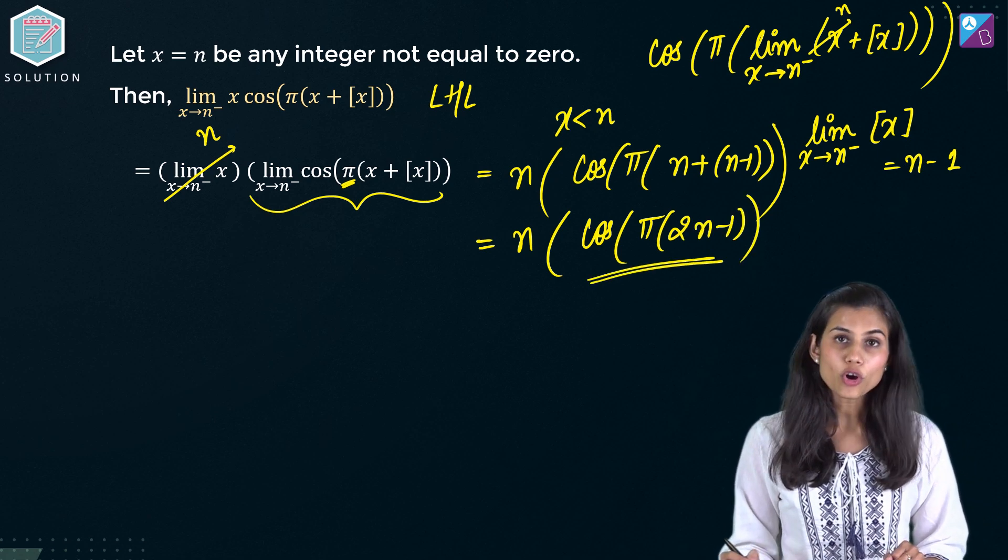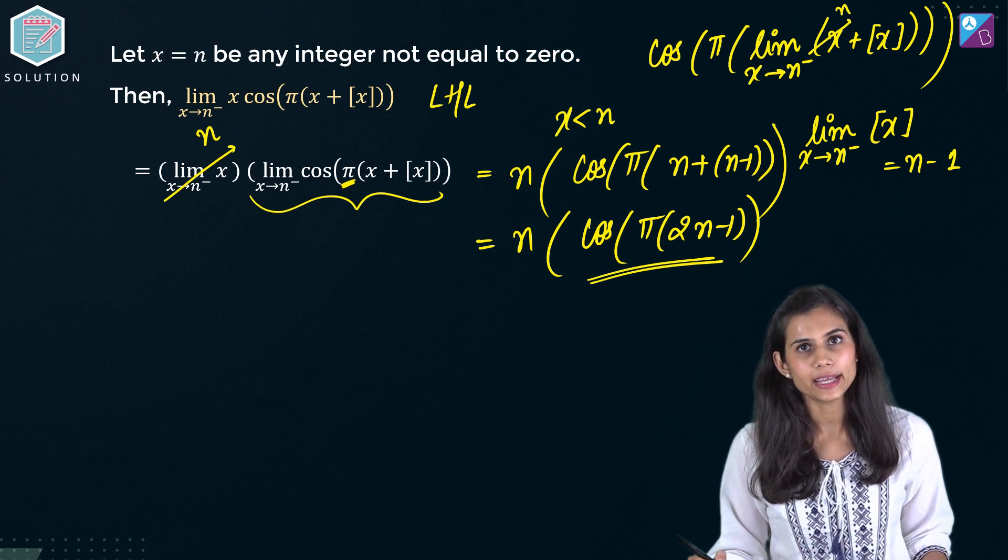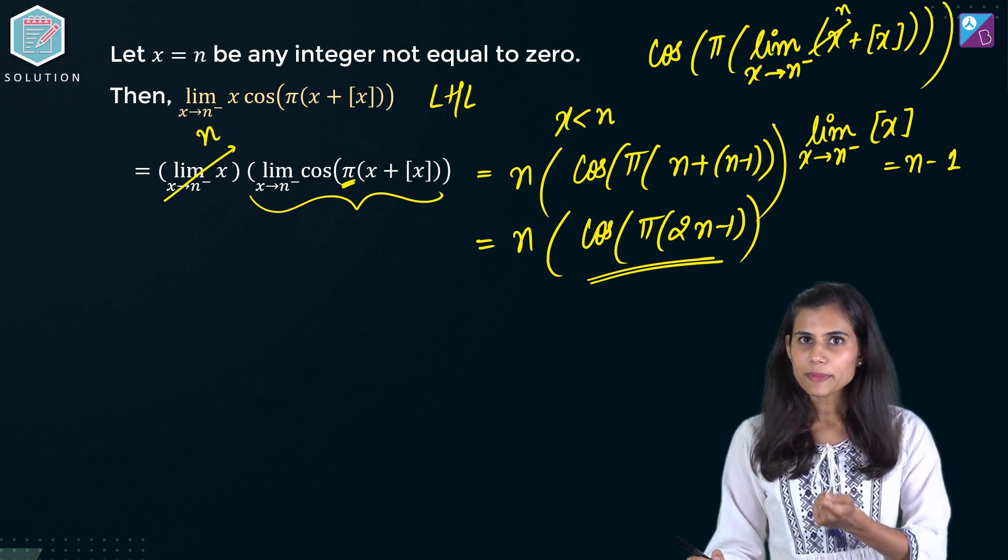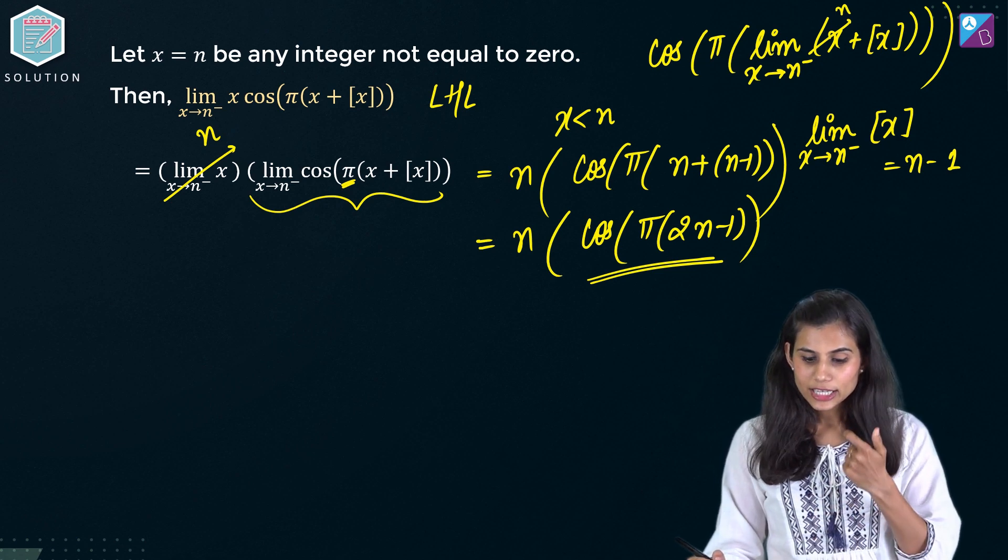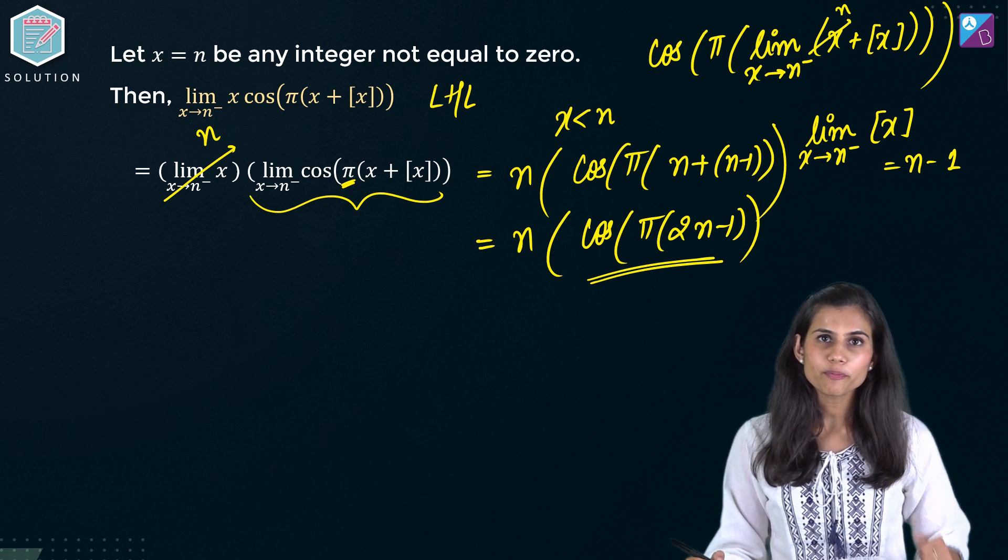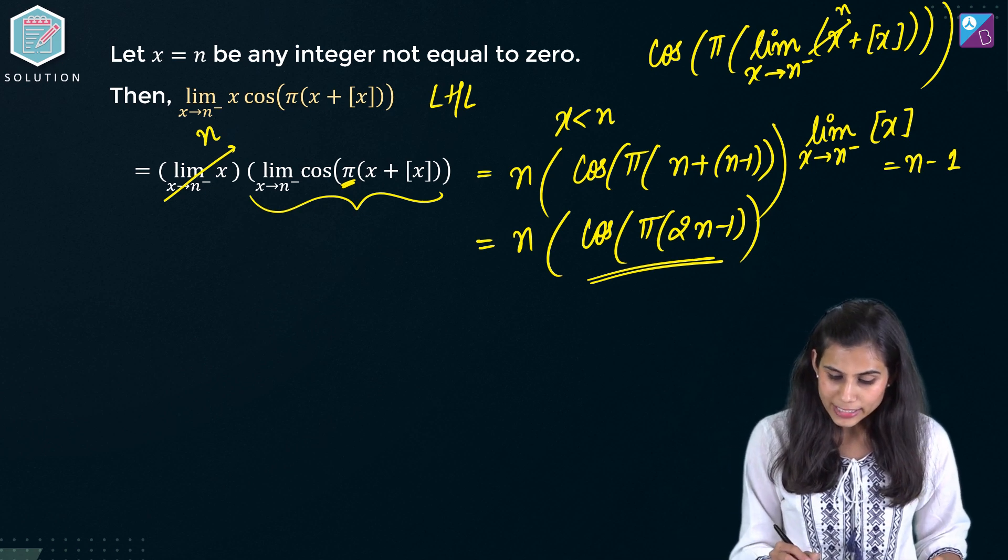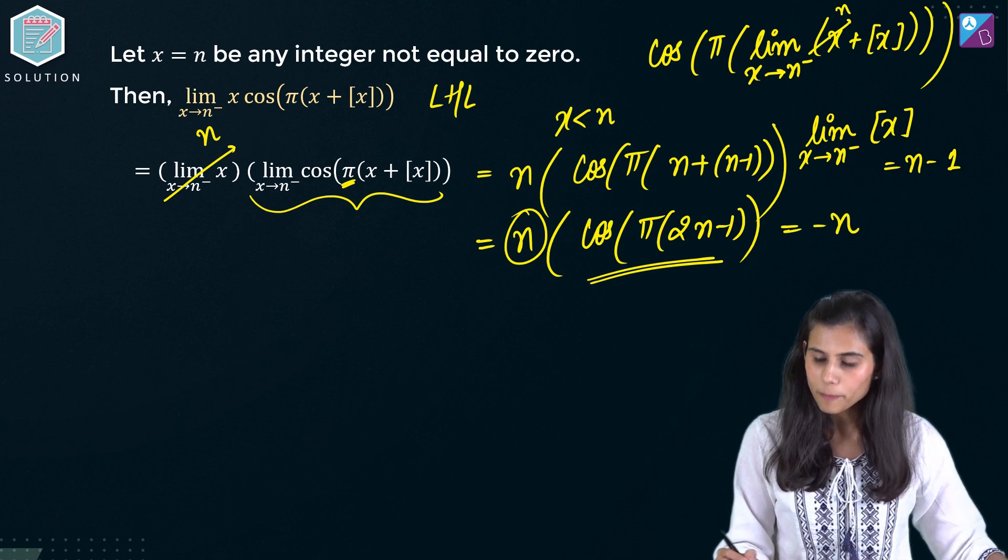Right? 2n minus 1 is odd. Correct? Cos of any odd integral multiple of pi comes out to be minus 1. Minus 1 multiplied with this n will give you minus n. So left hand limit is coming out to be minus n.